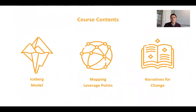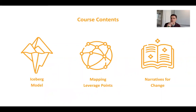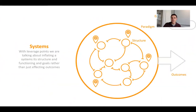We've broken the tutorial out into three main dimensions. We'll be talking about the iceberg model as a way to understand the different levels of intervention, mapping leverage points, looking at systems maps and then places to intervene there and how to design those interventions. Finally, we'll be talking about narratives for change — ways to influence the paradigm and thinking within the system and achieve that highest level of influence.